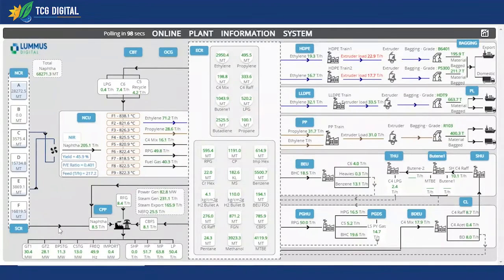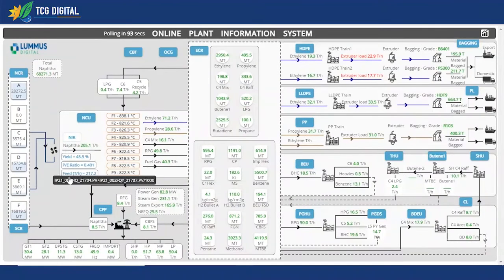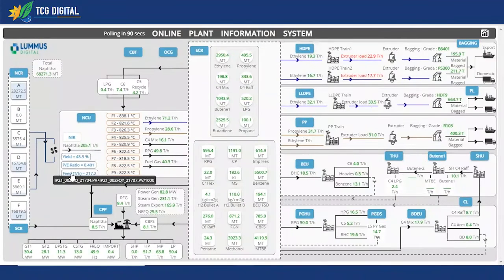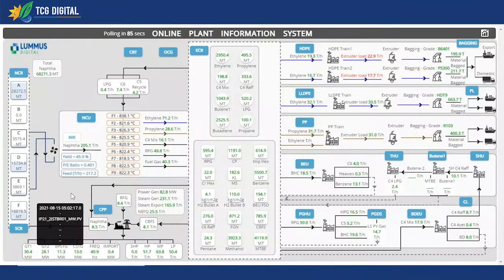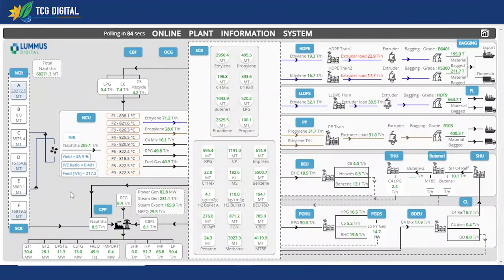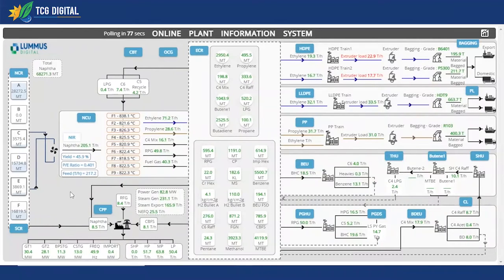You can see different KPIs being reported. Some of the KPIs directly come in as inputs, such as the feed, whereas some of these KPIs involve real-time computations on the input data. For example, the yield is a computed KPI and so is the P by E ratio. All this gets refreshed on a real-time basis and you can also see some of these KPIs in red.